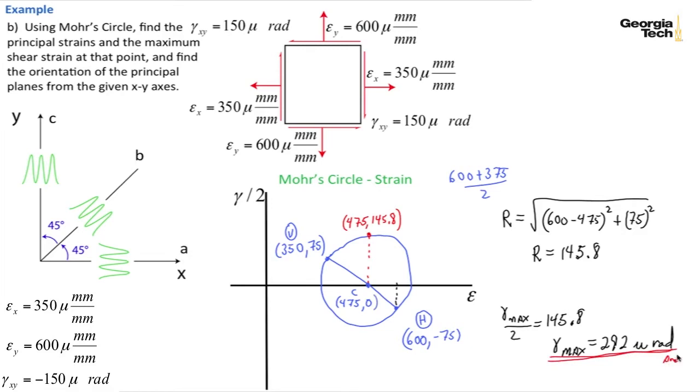I still want to find my principal strains. If I add the radius to 475, that's going to give me my first principal strain, so epsilon sub 1 is going to be 475 plus 145.8.